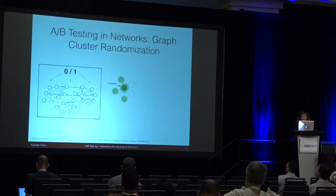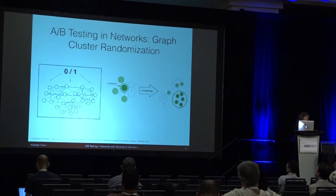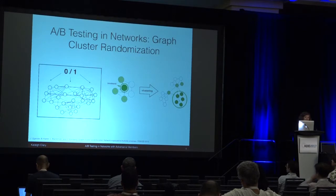Instead, what we'll do is use an alternative framework: graph cluster randomization. In this setup, instead of randomly assigning treatment to everyone in the network, we will first cluster the graph and then apply treatment at the cluster level. This sort of insulates that spillover effect and prevents it from infiltrating the entire graph.